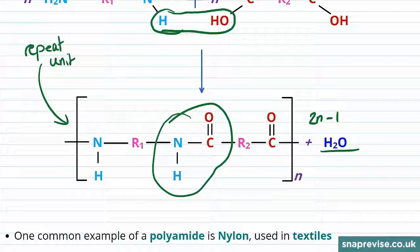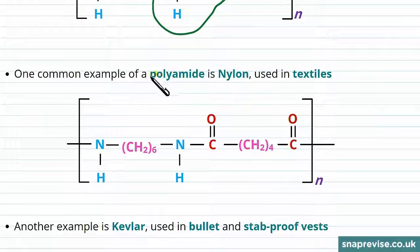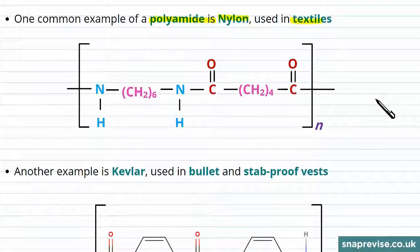A common example of a polyamide is nylon, which is used in textiles, and lots of clothes and fabrics contain nylon.